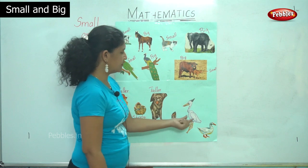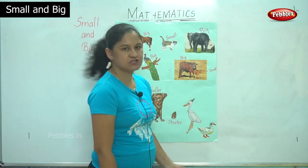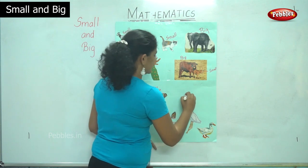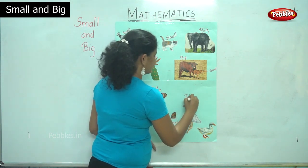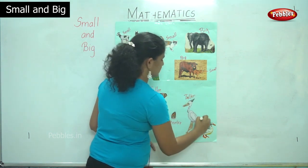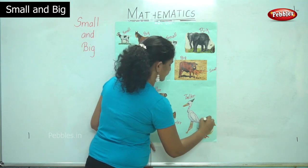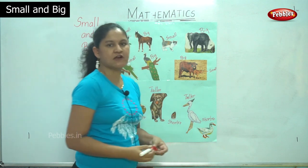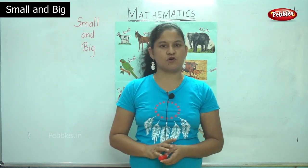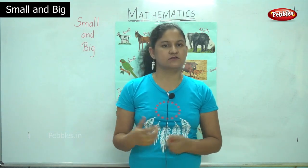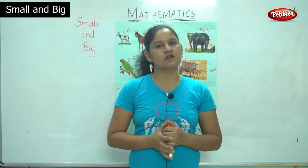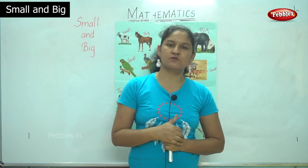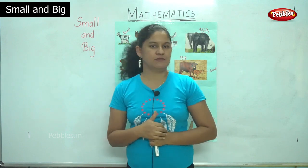Then we have the picture of a crane and a duck. By looking at the picture we can say that the crane is taller and the duck is shorter. I hope you have understood the concept of big and small and tall and short. Just by looking at objects we will be able to understand which is tall and which is big or small.